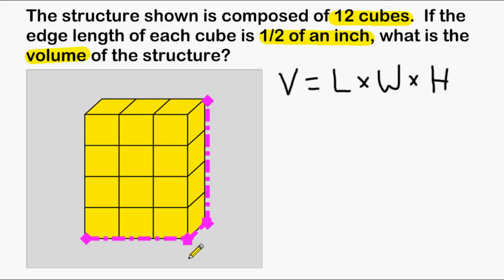The problem states that the edge length of each cube is one half of an inch. That means the distance from here to here would be one half of an inch. So we have another half of an inch here, and another half of an inch here. This dimension would be half of an inch.